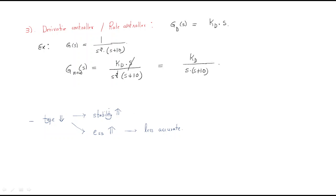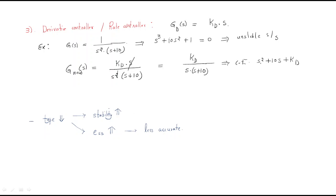The original system with s² in the numerator had characteristic equation s³ + 10s² + 1 = 0, which is unstable because it is missing the s¹ term. But after adding the derivative controller, the CE becomes s² + 10s + KD, which has all powers of s present, so the system becomes stable.